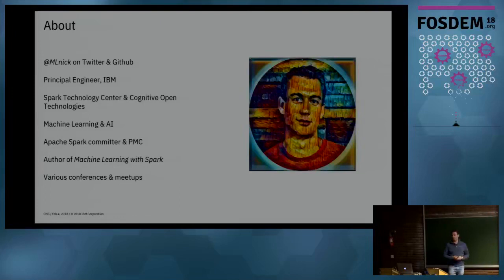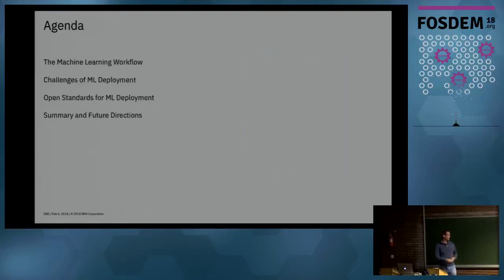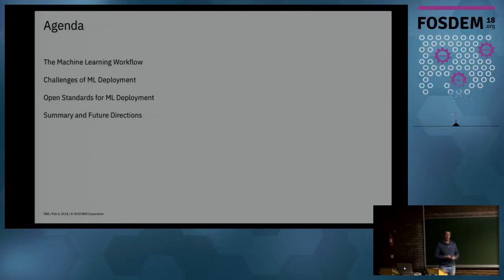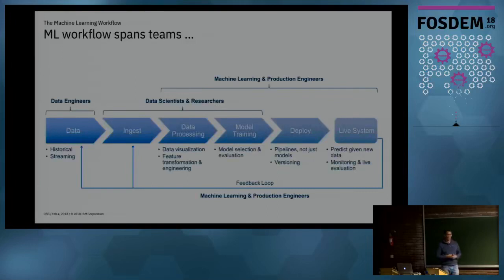I'm a committer and PMC member on the Apache Spark project, and I've written a fairly out-of-date book called Machine Learning with Spark. Today we're going to talk about the machine learning workflow, the challenges inherent in that workflow — in particular the end piece of deploying machine learning pipelines to production — and how open standards can help solve that problem.